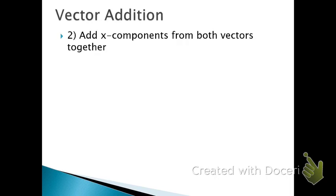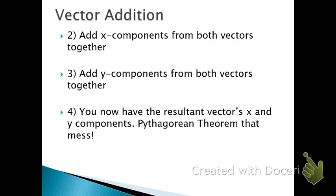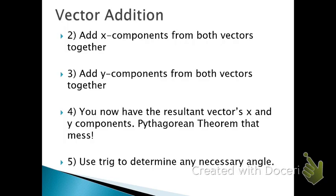Step two, add the x components from both vectors together. Step three, add the y components from both vectors together. And now you've got the two legs of the triangle. Pythagorean theorem, the heck out of that thing. And use right triangle trig to figure out any necessary angle.